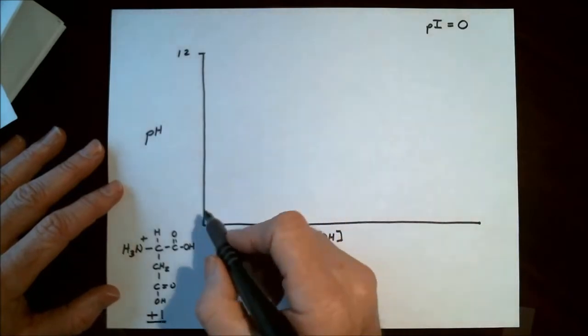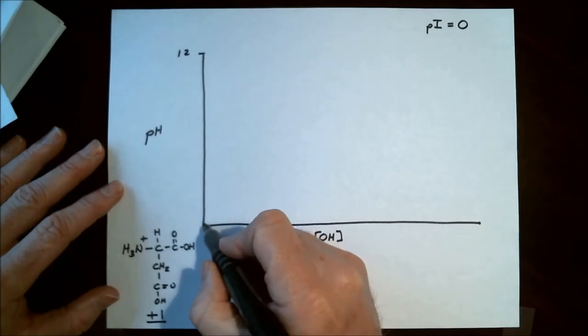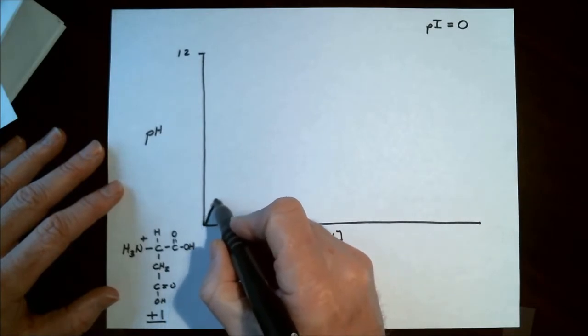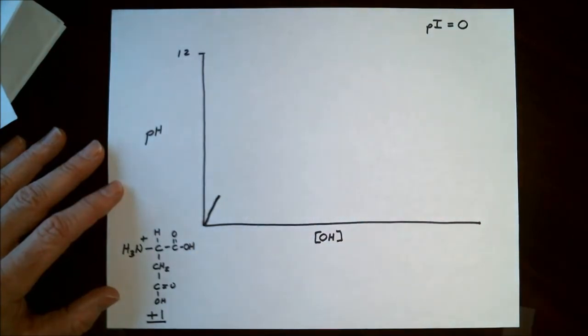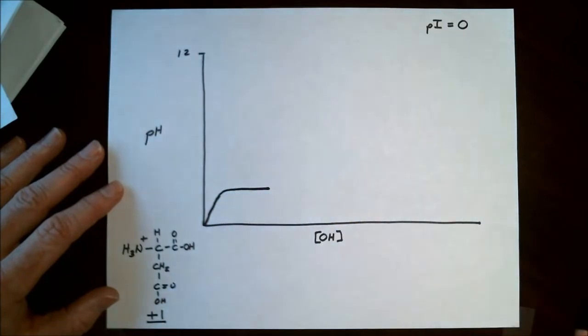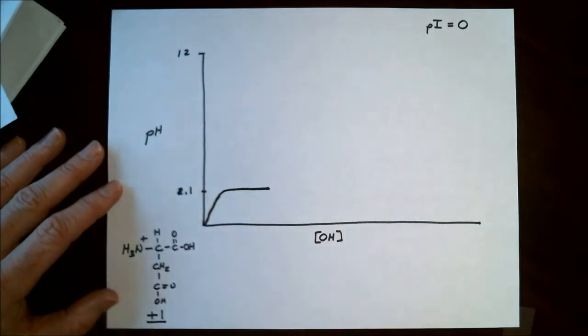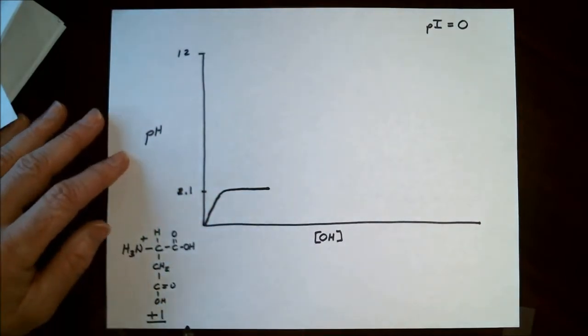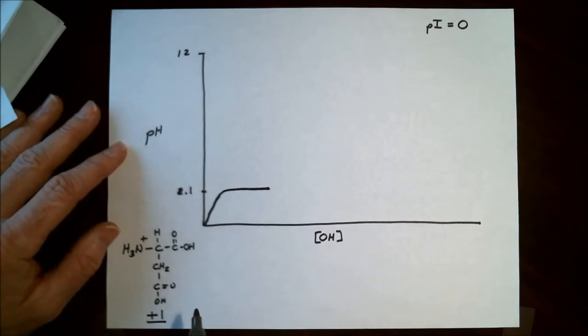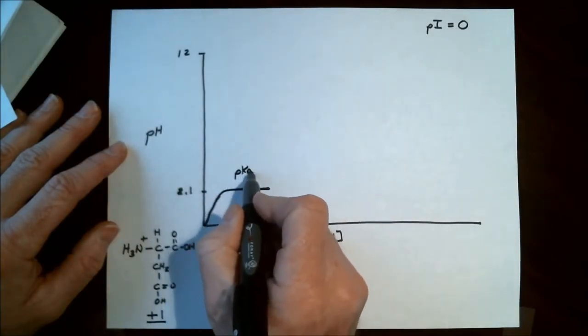Now as we titrate the hydroxide into the solution, the pH, of course, will increase, becoming more basic. We will come to our first inflection point on the curve. And this first inflection point will be at a pH of 2.1. Now this point here is a buffering region. And buffering means that the functional group is half protonated, half deprotonated. So this here represents pKa1.